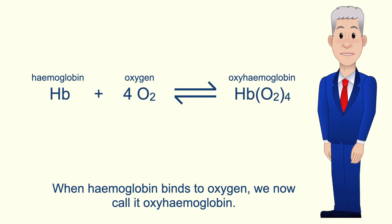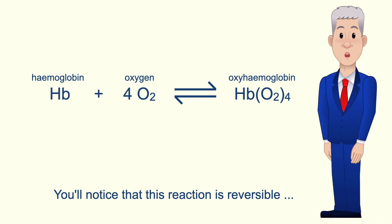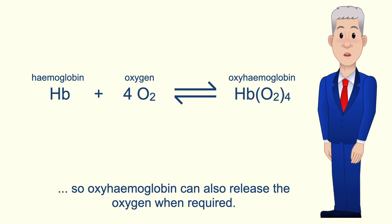When haemoglobin binds to oxygen we now call it oxyhaemoglobin. You'll notice that this reaction is reversible so oxyhaemoglobin can also release the oxygen when required.